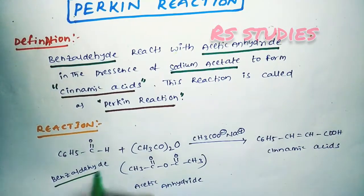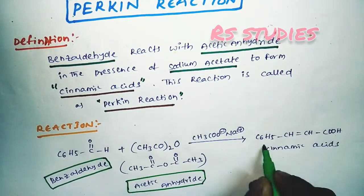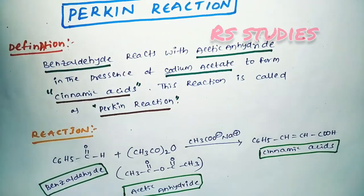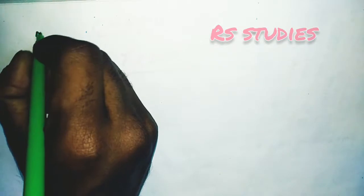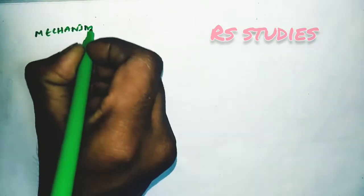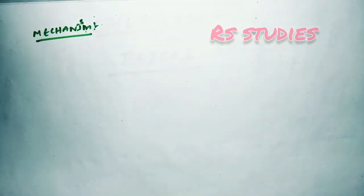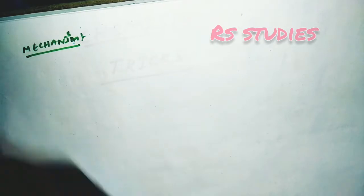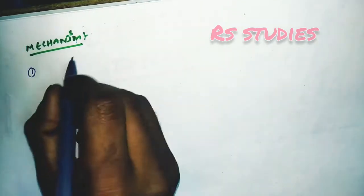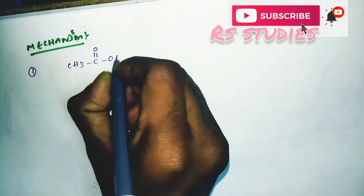So benzaldehyde reacts with acetic anhydride in the presence of sodium acetate to form cinnamic acid. Now we know the name and the reaction. Next, I will go through the mechanism of the Perkin reaction. The mechanism is a very simple mechanism.